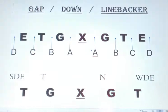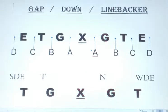For example, this nose guard is in A gap as a one technique. This tackle is a 3 technique responsible for B gap. The strong side defensive end is responsible for C gap, and the weak side defensive end is responsible for C gap as well. So if the center has to block right, he first checks his gap, then checks for his down defensive lineman. There are only two things that can be in your gap: either a defensive lineman or a linebacker.